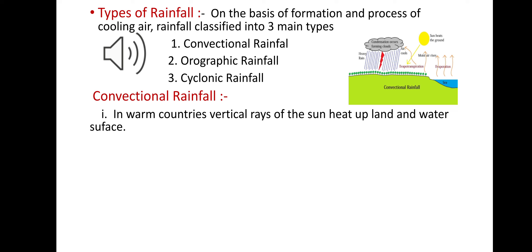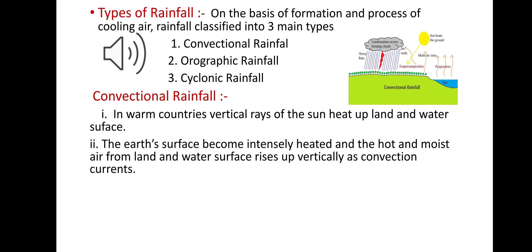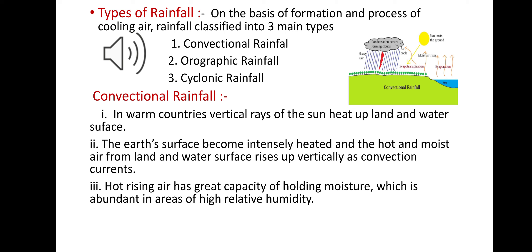Convectional rainfall happens in warm countries where the sun's rays are vertical, heating up the land and water surface. The earth's surface becomes intensely heated and the hot and moist air from the land and water surface rises up vertically as a convectional current. Hot rising air has great capacity for holding moisture, which is abundant in areas of high relative humidity.